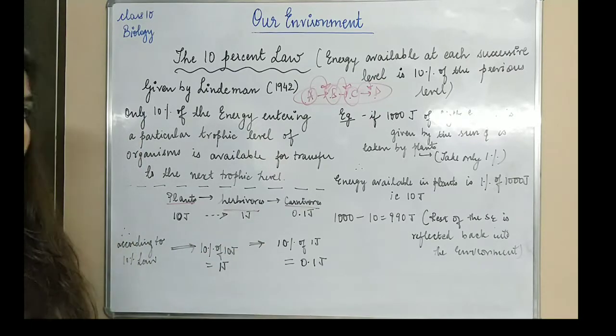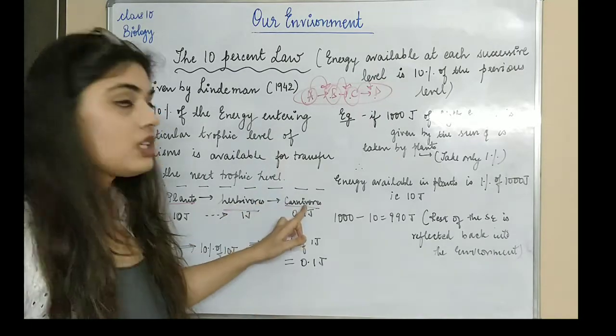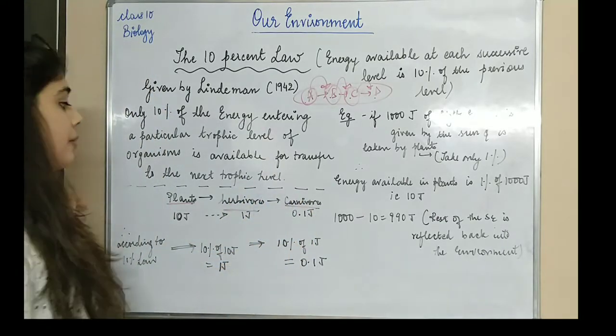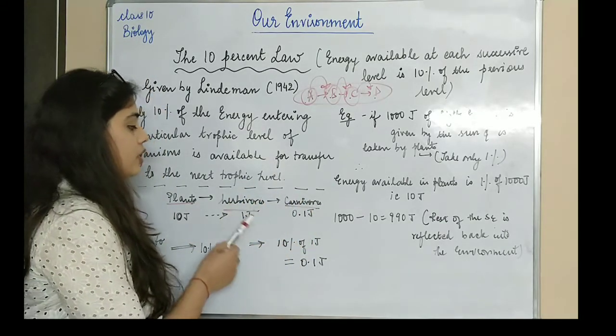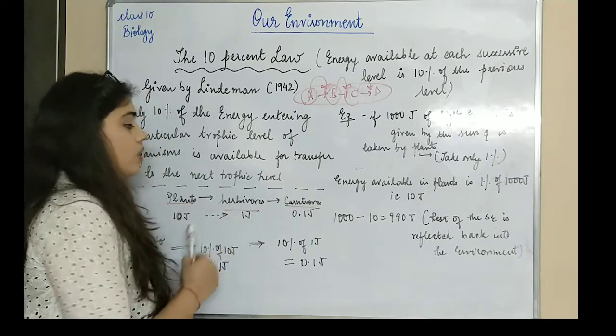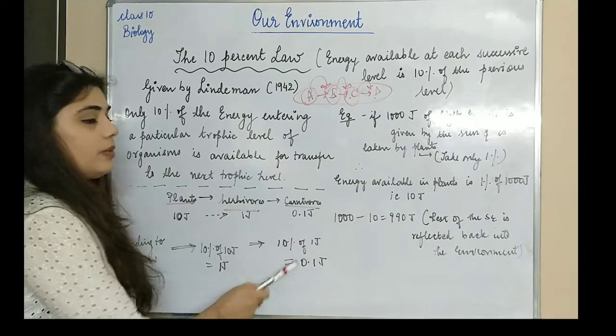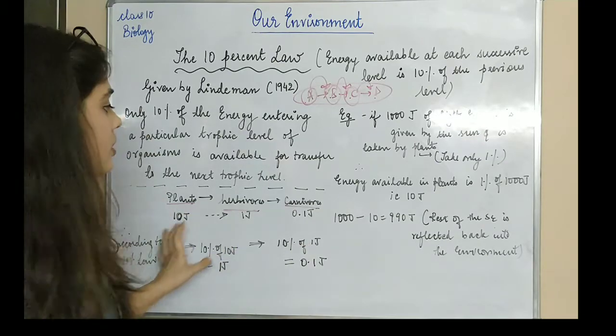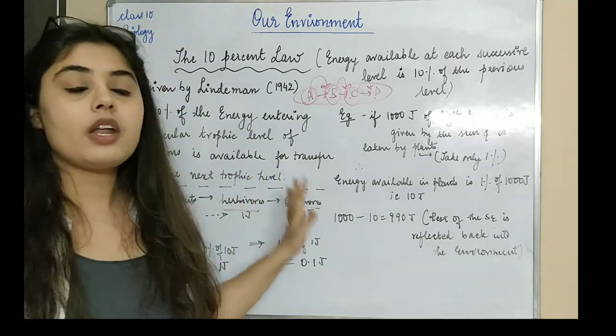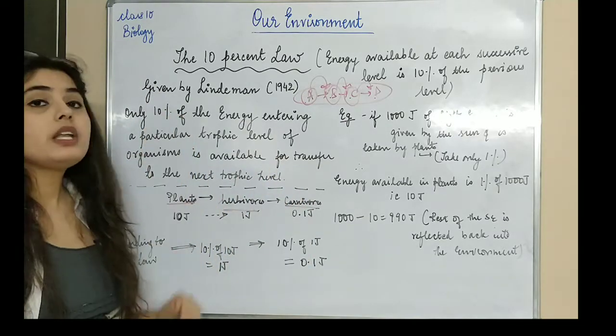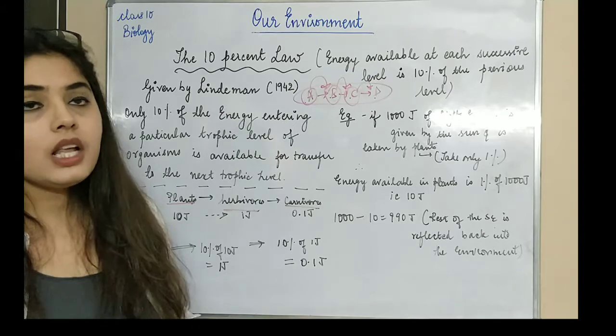Then again, when it transfers next, when the herbivores are eaten by the carnivores, again 10% of this 1 joule will only be transferred to carnivores. So 10% of 1 joule will be 0.1 joule. This is how energy transfer happens, and this law was given by Lindeman in 1942.